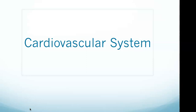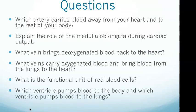We always have questions at the beginning that we refer to throughout the video. Things to focus on: which artery carries blood away from your heart and to the rest of your body? Explain the role of the medulla oblongata during cardiac output. What vein brings deoxygenated blood back to the heart? What veins carry oxygenated blood and bring blood from the lungs to the heart? What is the functional unit of red blood cells? And which ventricle pumps blood to the body and which one pumps blood to the lungs?